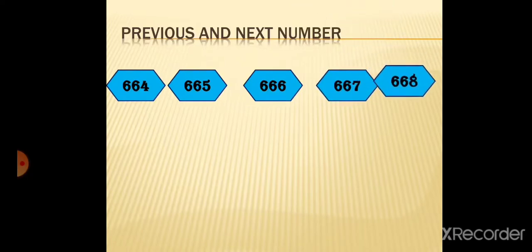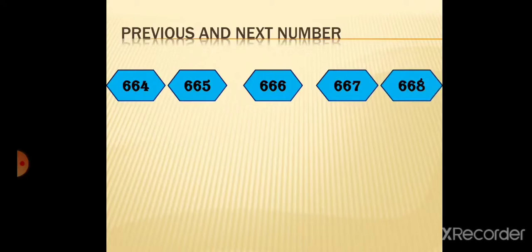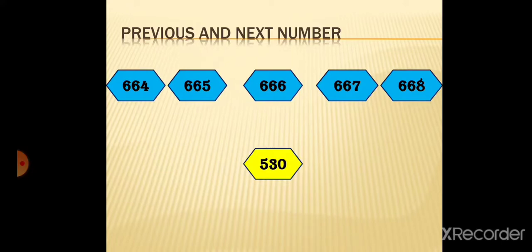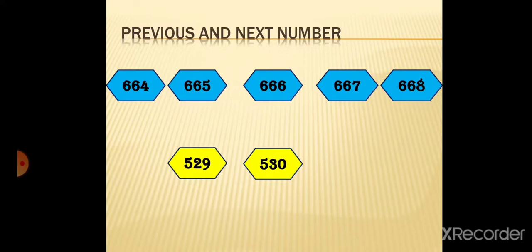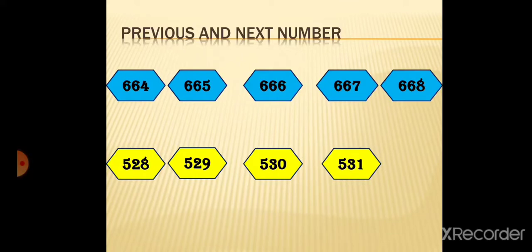The next number of 666: 666 plus 1 gives 667, and 667 plus 1 gives 668. So the two next numbers of 666 are 667 and 668. Let's take one more example. 530 minus 1 is 529, and 529 minus 1 is 528. The next numbers of 530 are 531 and 532.